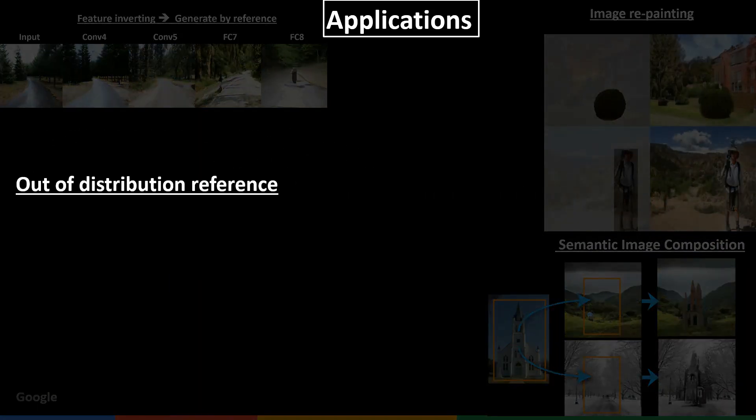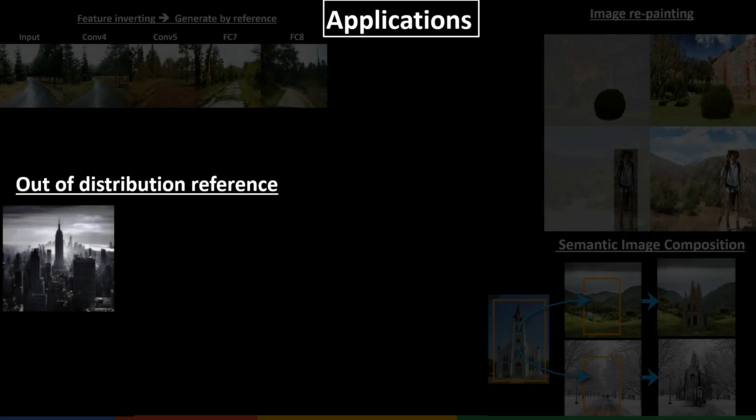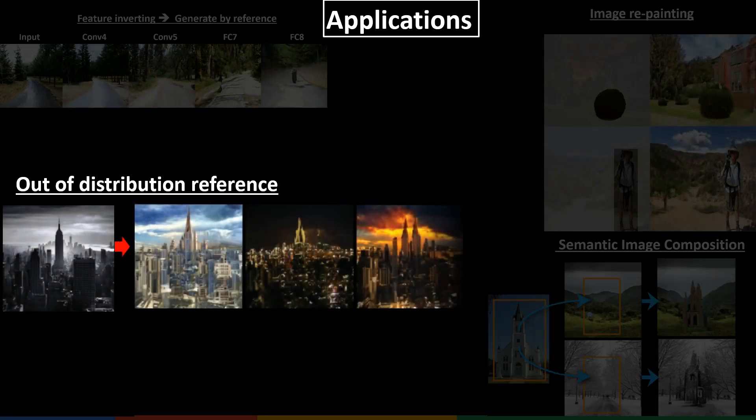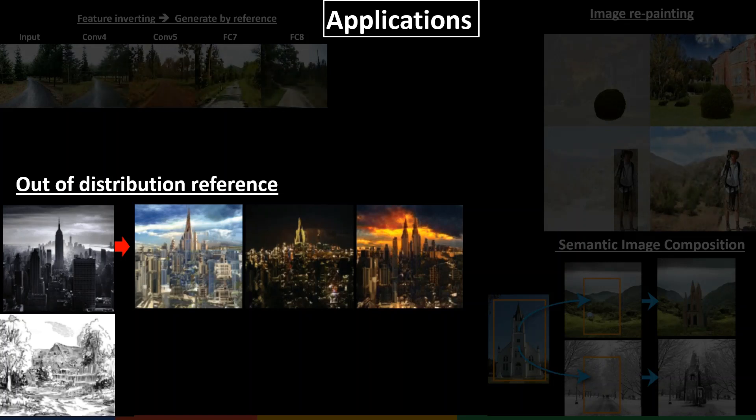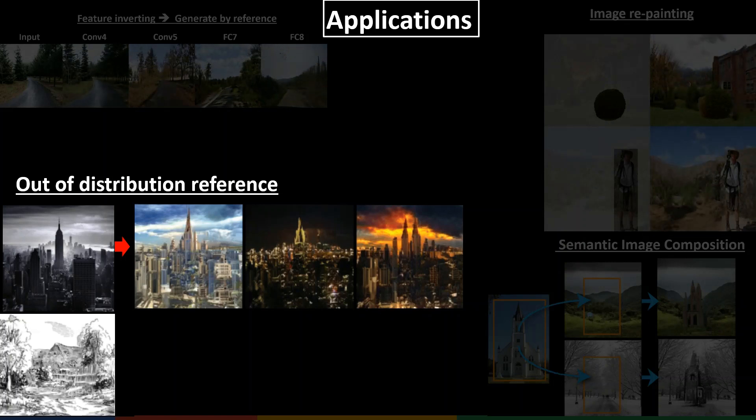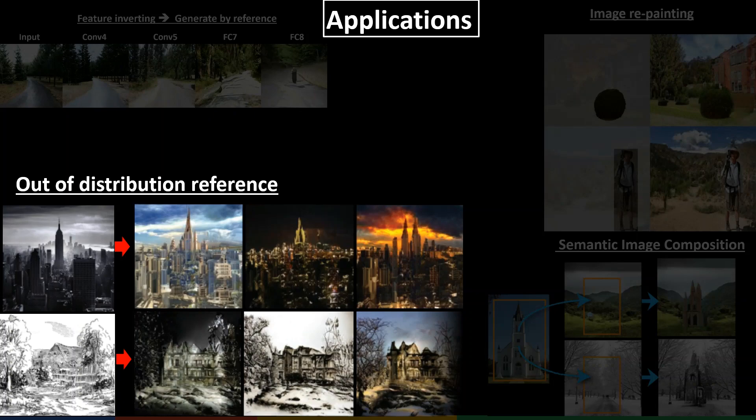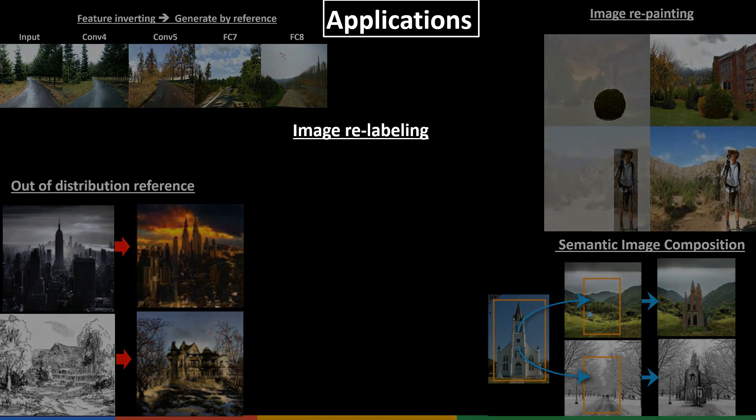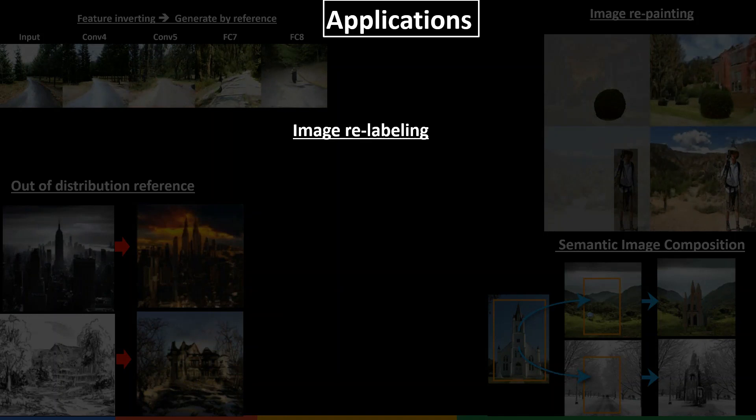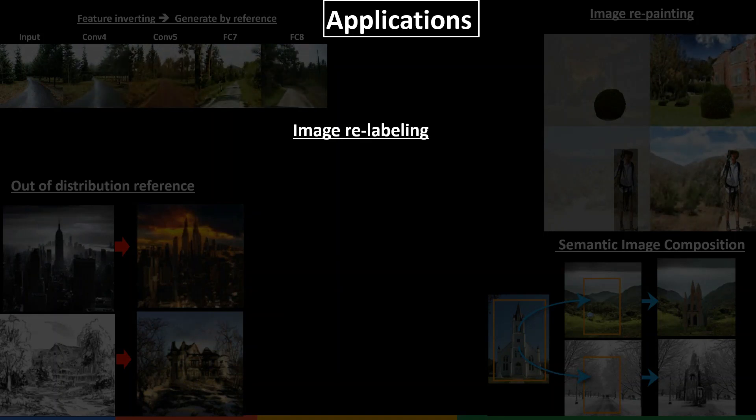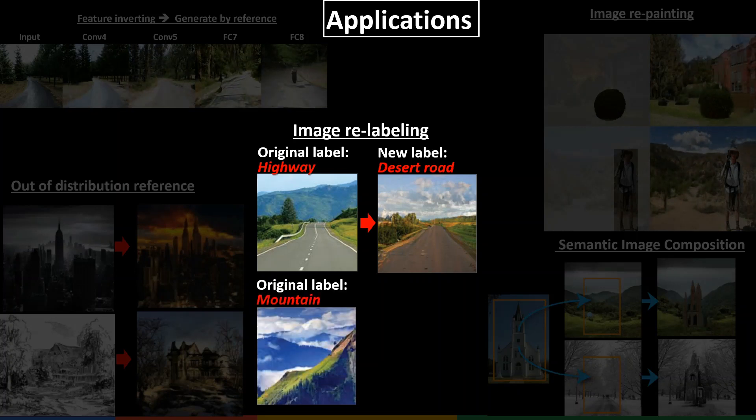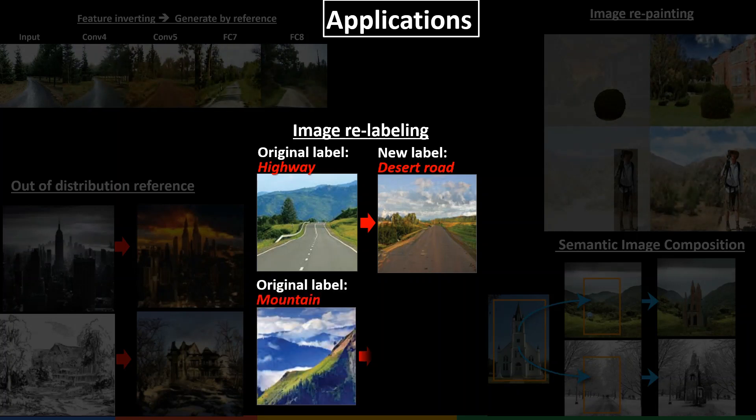We can also use a special reference such as a grayscale image to generate diverse natural images. Or translate a sketch to realistic looking scenes. Lastly, we demonstrate relabeling of some given image to a different class, so we can turn a highway into a desert road, or a mountain into a volcano.